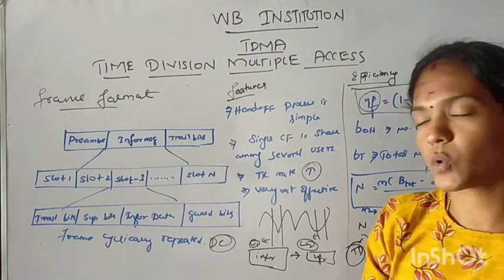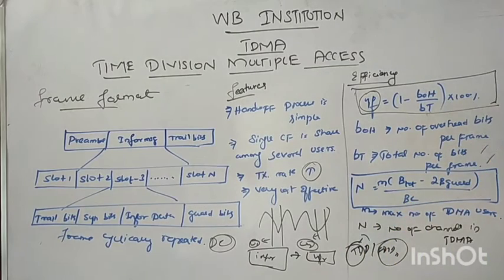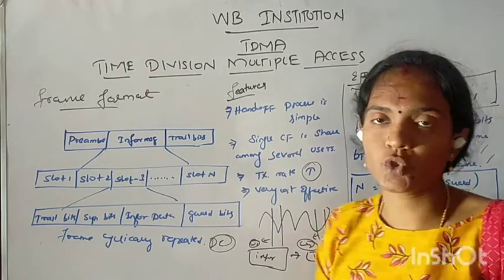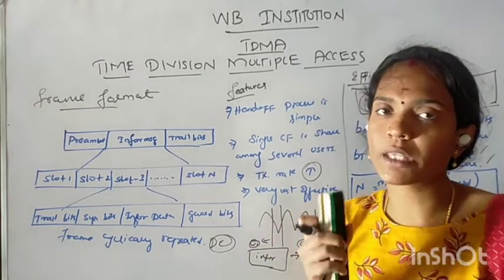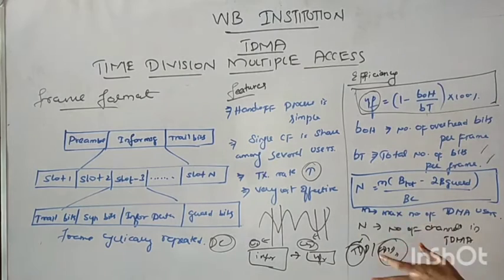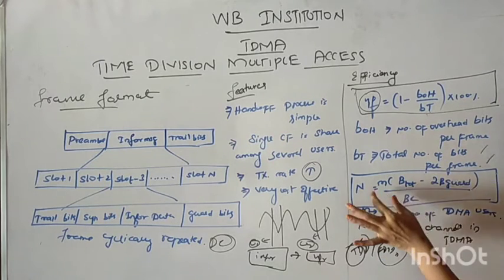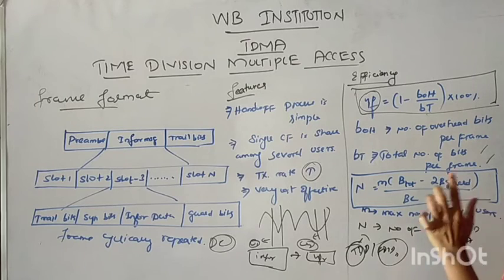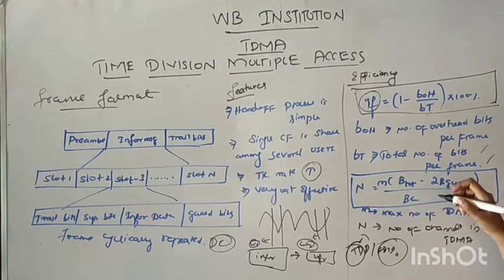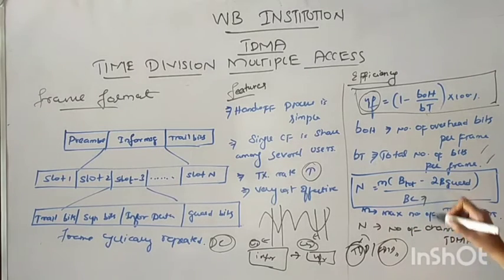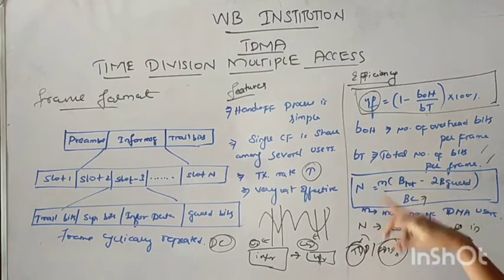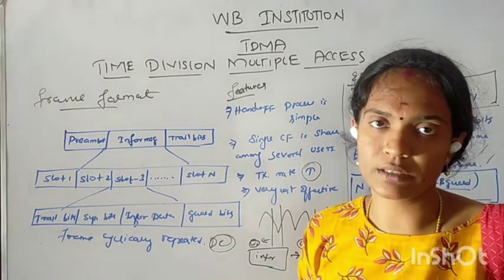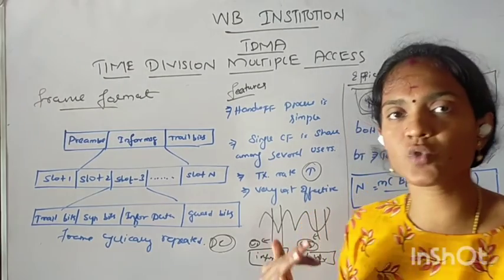N represents the number of channels in TDMA. The formula for the maximum number of TDMA users is: M equals (V_OT minus 2 * B_guard) divided by V_C, where V_C represents the channel. That is the formula for the maximum number of TDMA users.